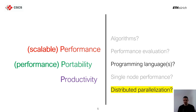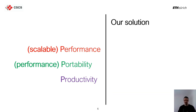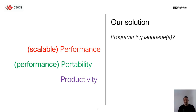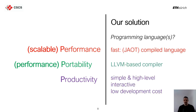Of course, we also need to answer the question: which programming language or languages do you want to use? The language we choose itself should also contribute to addressing the three P's. So we want to have a fast language — meaning a language that allows you to write fast code.